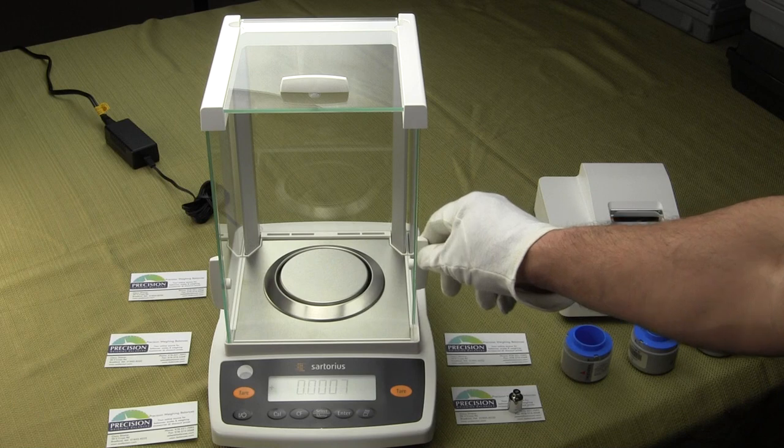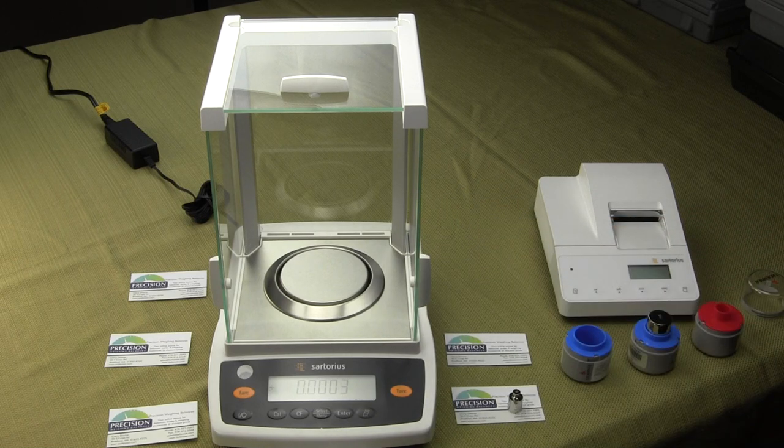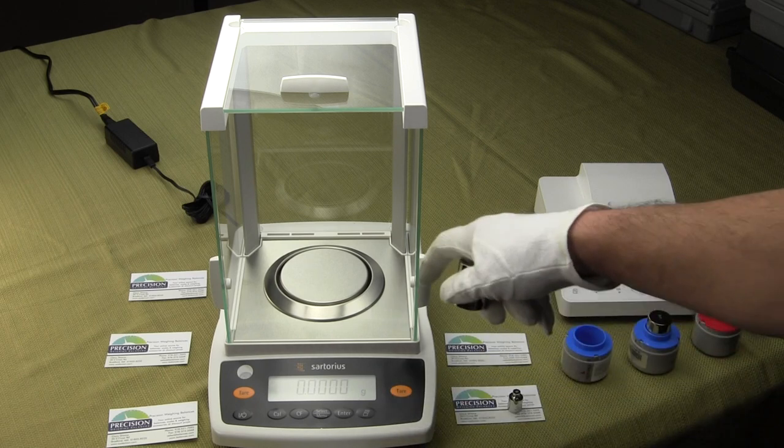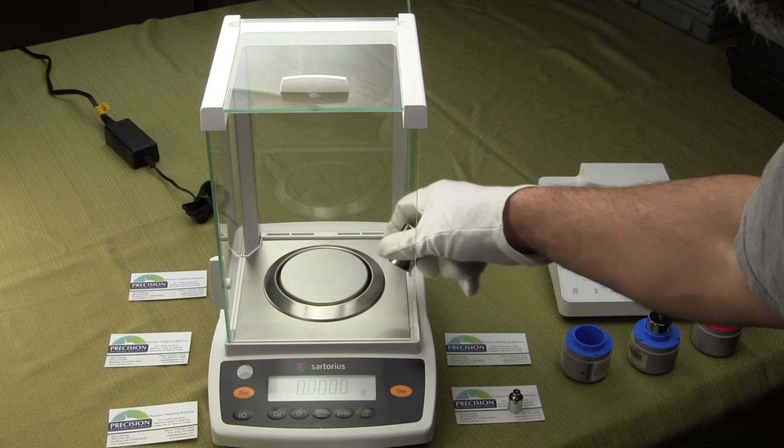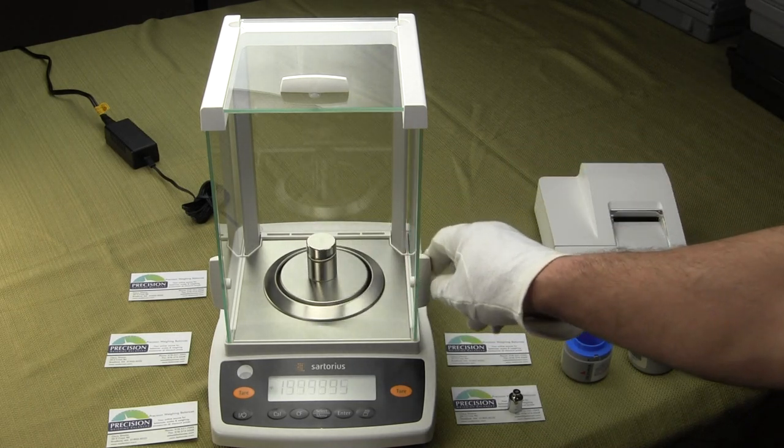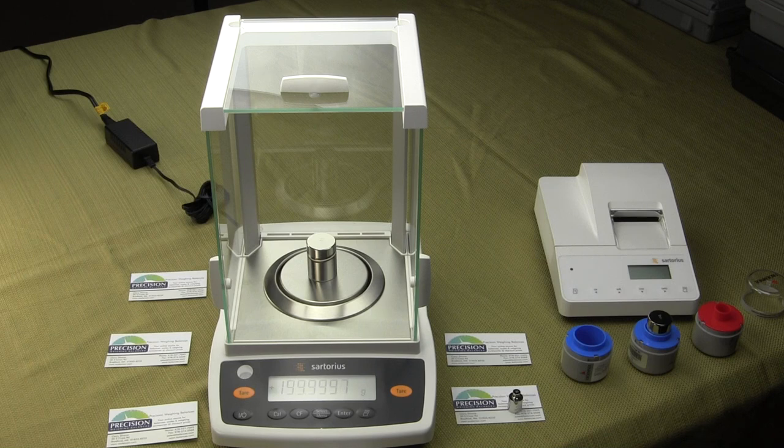Remove the weight. You always have to close the doors with these balances. Best to hit the tare button to tare the balance. Open the door, place your sample in the center, and the calibration is complete.